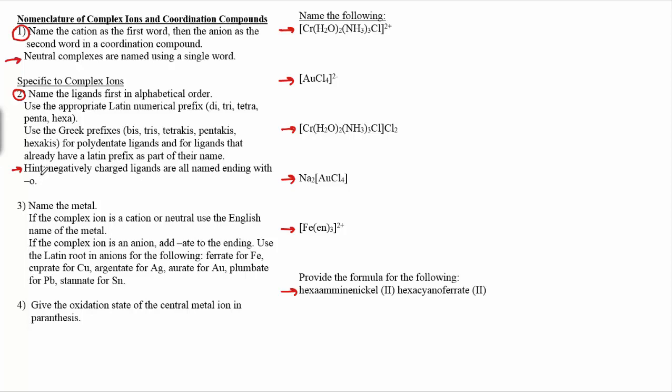And the halogens are all fluoro, chloro, bromo, iodo ending with O, so they're negatively charged, so on and so forth. Finally, after that, we'll name the metal. If it's part of a cation or neutral species, we just name the metal as in English.